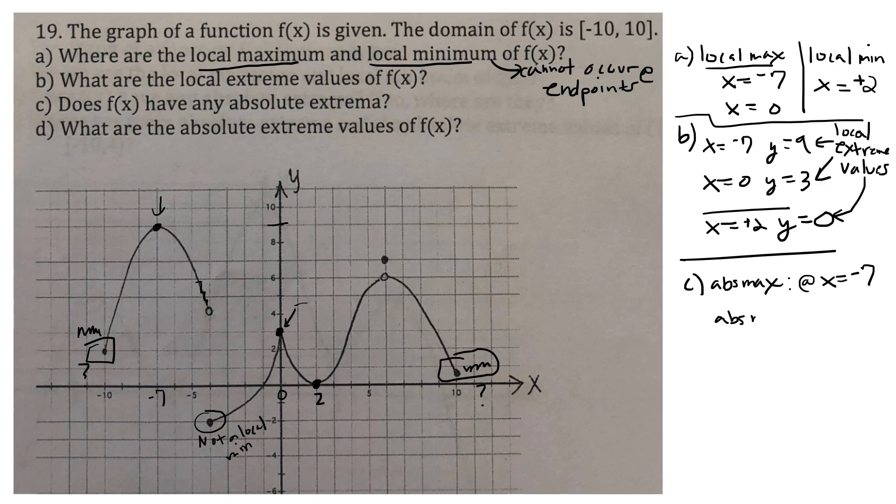The absolute min is going to occur, the smallest that the function ever gets, because this dot is closed here, is at x equals negative 4. So you can be an absolute min and not a local min on the inside, that's possible.